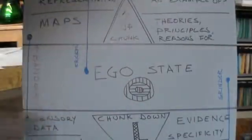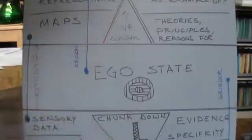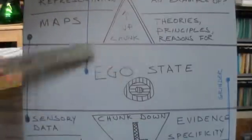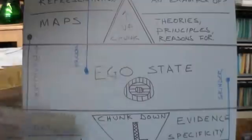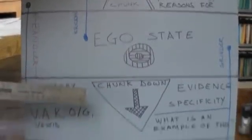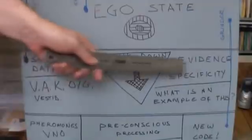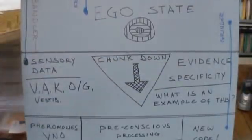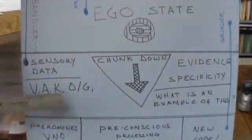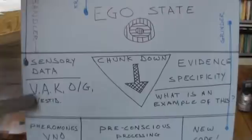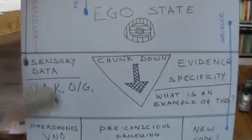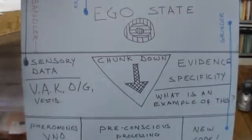As our work progresses, the ego state will open up to greater areas that were previously unconscious or only accessible through effort. Down here, we have the area of chunking down, where we're looking at very specific things — perceptual sharpening and perceptual attunement of the visual, auditory, kinesthetic, olfactory and gustatory, and the vestibular system, which has a few extra details to it.